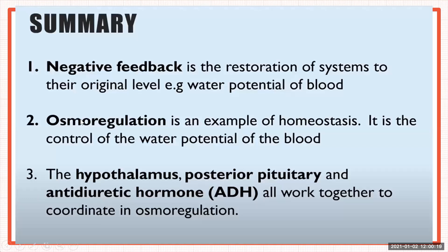Finally, to summarize: negative feedback is the restoration of systems to their original level — for example, the water potential of the blood. Osmoregulation is an example of homeostasis and involves control of water potential of the blood. The hypothalamus, the posterior pituitary gland, and antidiuretic hormone all work together to coordinate osmoregulation.